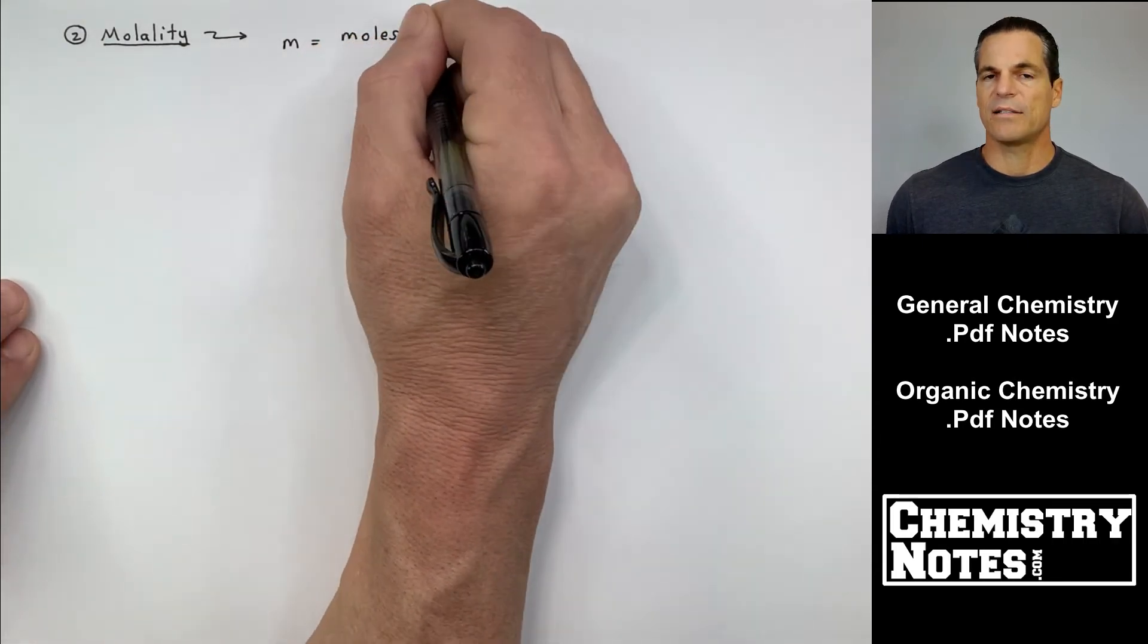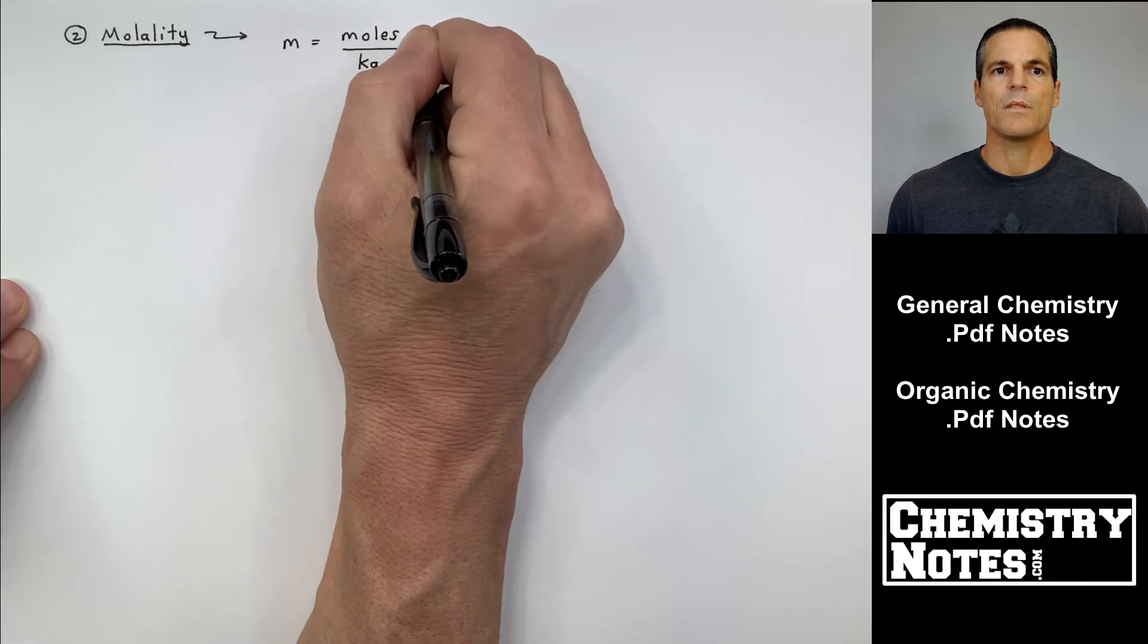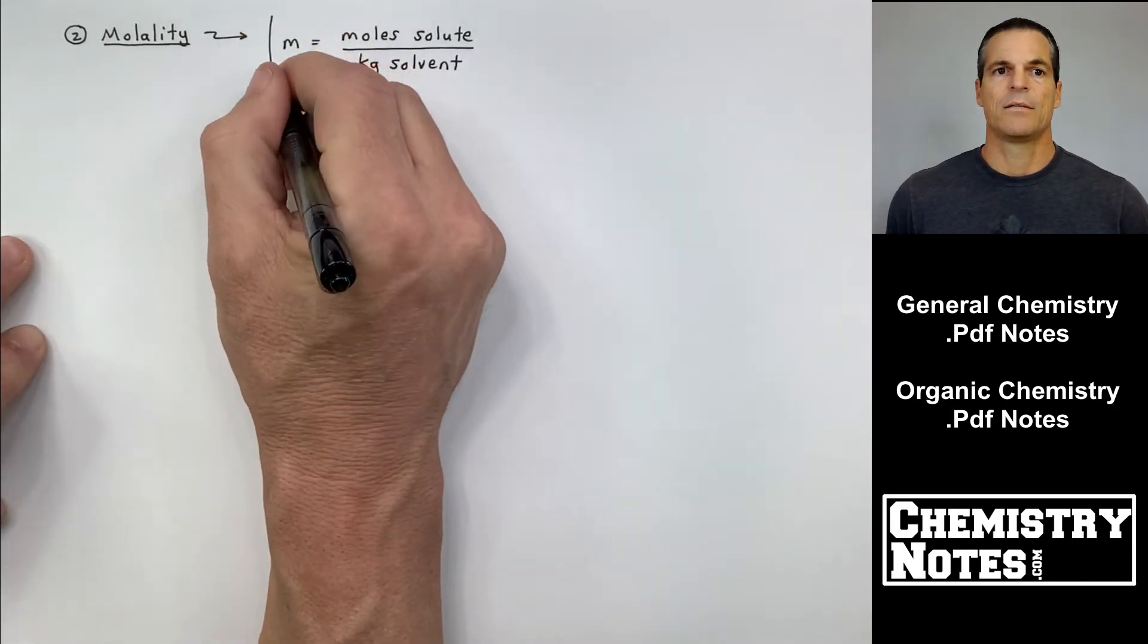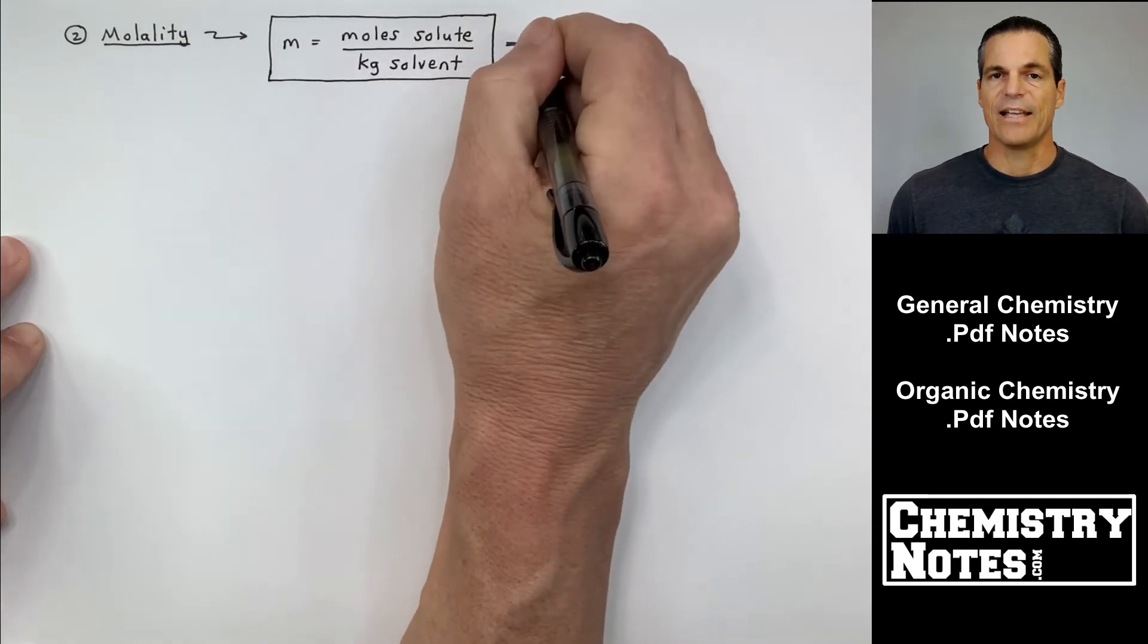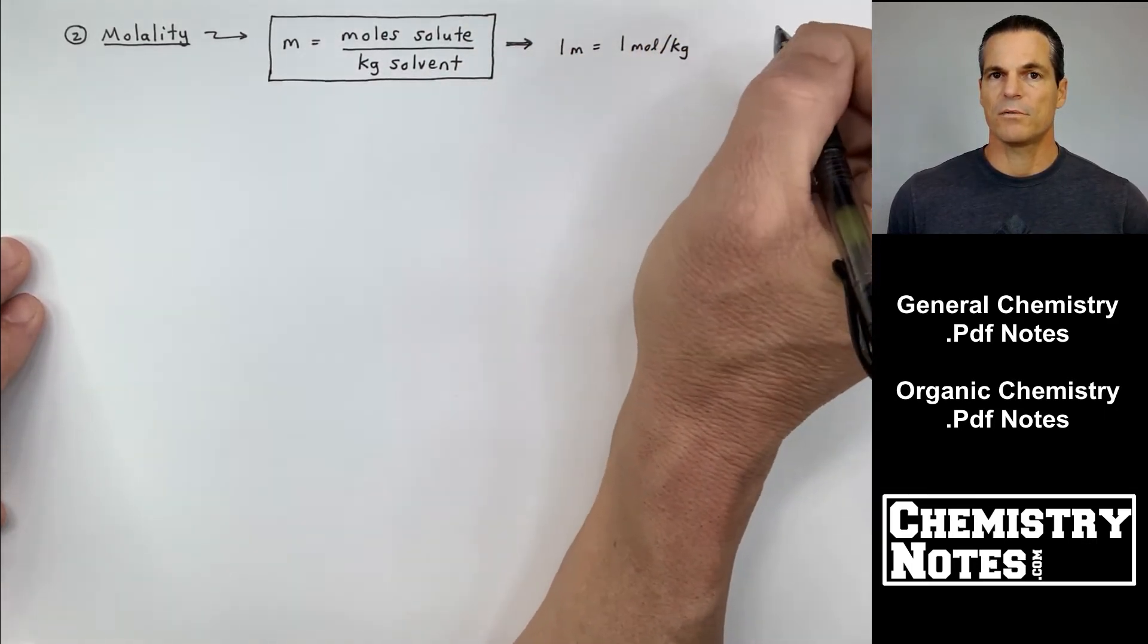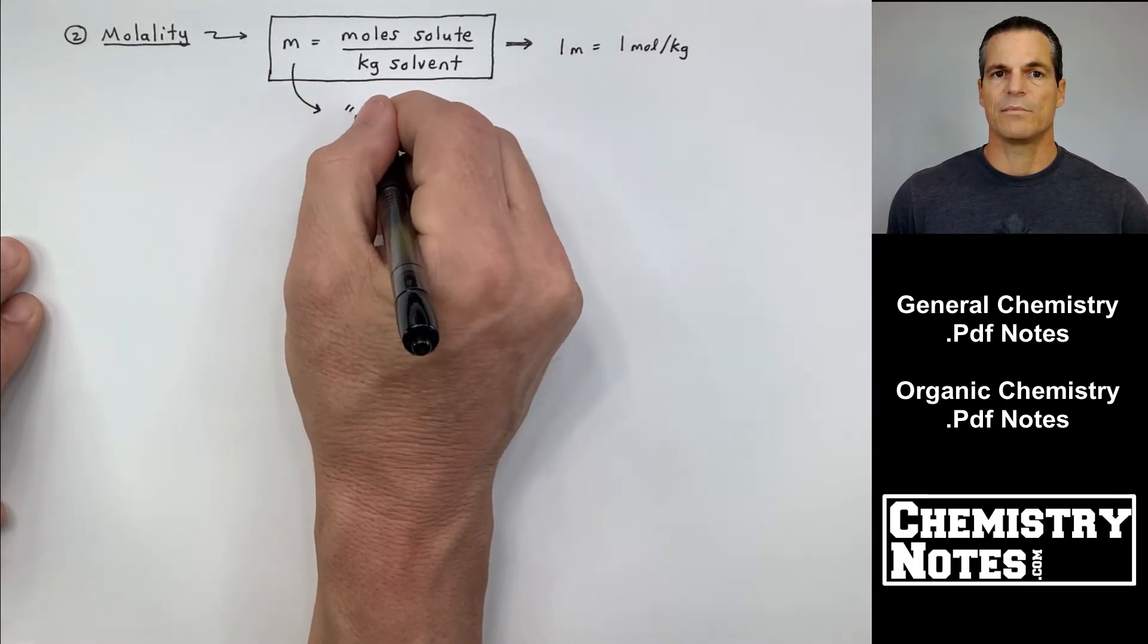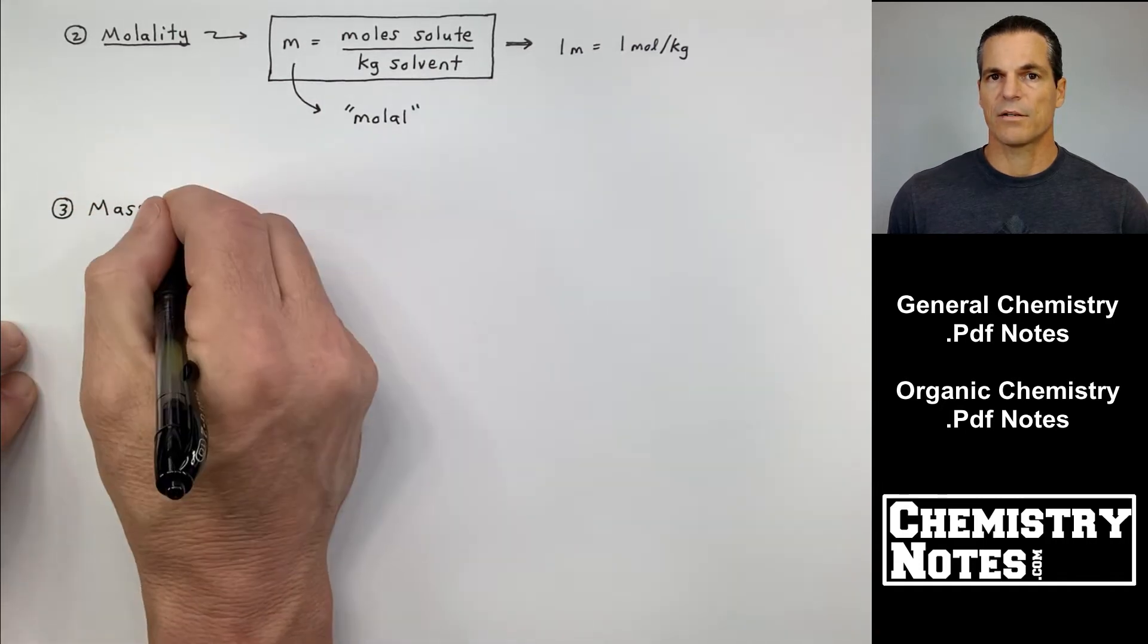The rest of them are not as common, except for maybe mass percent. Number two, molality. Molality is not a big M, it's a little m. So molality has a little m and it's moles of solute divided by kilograms of solvent. One molal is equal to one mole per kilogram.